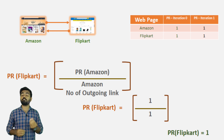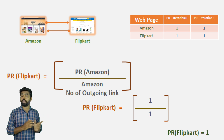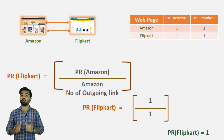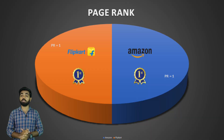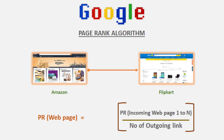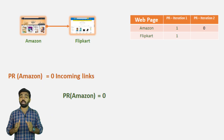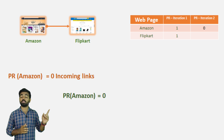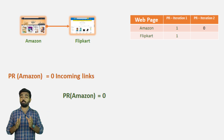The outgoing link is one. So the PageRank of Amazon is one divided by one, which equals one. Now let's take another example. There are two pages. The link to Amazon — that is the idea. Then we can take the PageRank and use the same page. We can use the Amazon PageRank. In this example, there is no incoming link to Amazon, so it will give you zero.